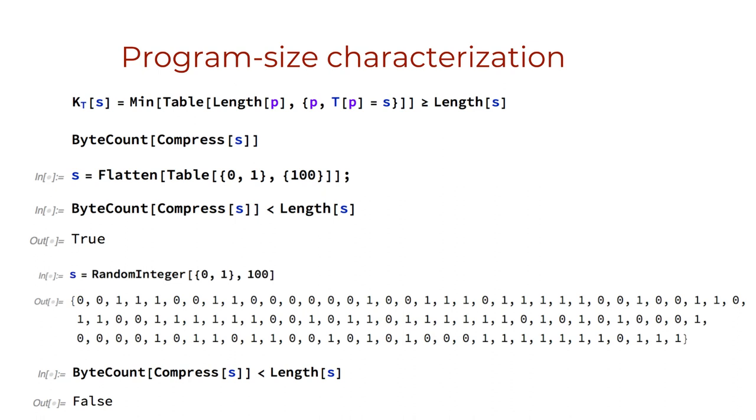So a string is said to be random, algorithmically random, if its shortest computer program, the length of the shortest computer program P running on T that produces S is not very different to the length of the string itself, and all is measured in bits, both the sequence and the Turing machine.